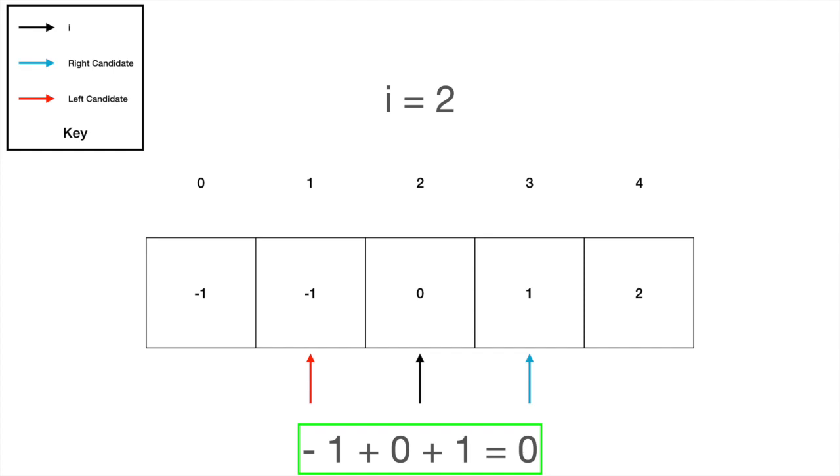We then decrement the left-hand pointer. One, zero, and one do sum to zero, but we already have these elements in our output set. When we decrement our left candidate, we are once again out of the bounds of the array, so we increment I.